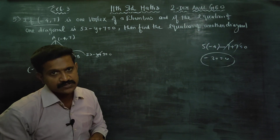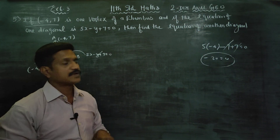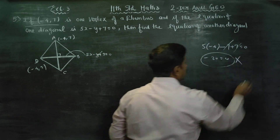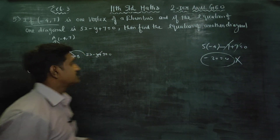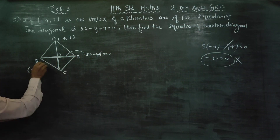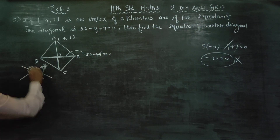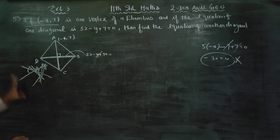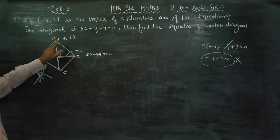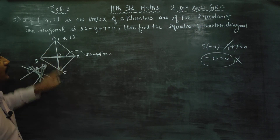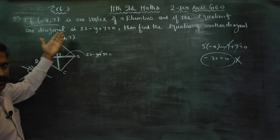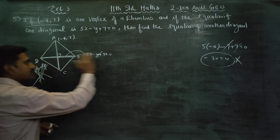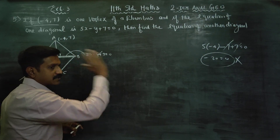Minus 20 is equal to 0 — is that true in mathematics? No, it's false. That's why this point, minus 4 comma 7, lies only on the other diagonal — only on A or C side.